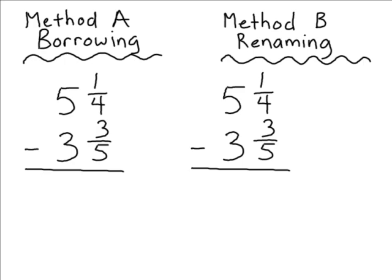Sometimes when subtracting mixed numbers, you are going to encounter some problems where the fraction part of the mixed number on the bottom is too large to subtract from the fraction portion at the top. If you come across a situation like this, there are two ways to handle it: one method is by using the borrowing method and another method is by using the renaming method. Let's start by demonstrating the borrowing method.